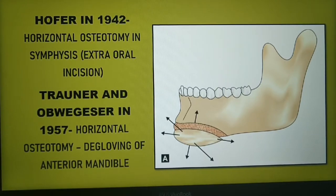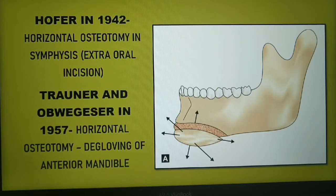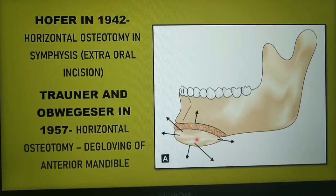Genioplasty has undergone evolution in its technique over time. It was Hofer in 1942 who introduced horizontal osteotomy in the symphysis region through an extraoral incision. Later in 1957, Prauner and Obwegeser performed horizontal osteotomy following degloving of the anterior mandible using an intraoral incision. As you can see in this figure, the osteotomized segment of the chin can be repositioned in all three planes of space: the vertical, anterior-posterior, and transverse planes.